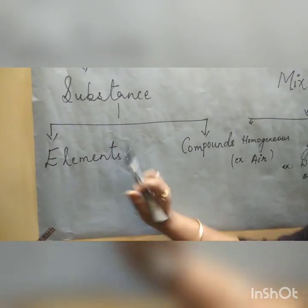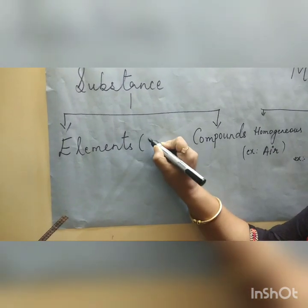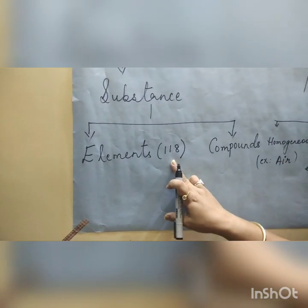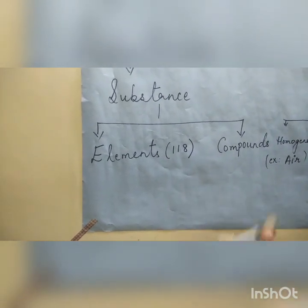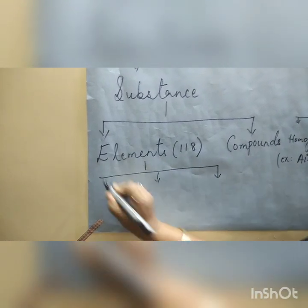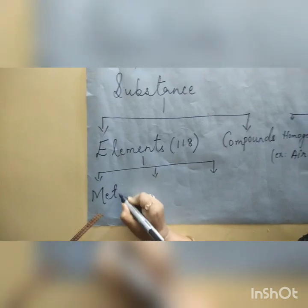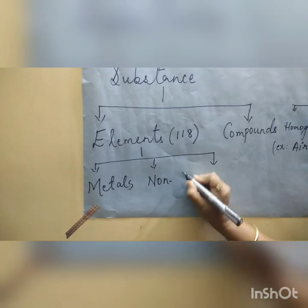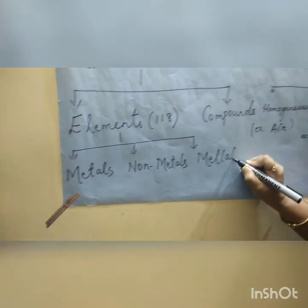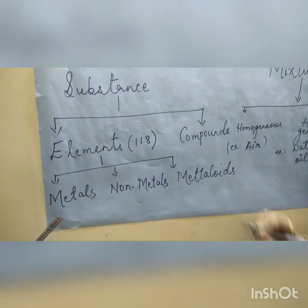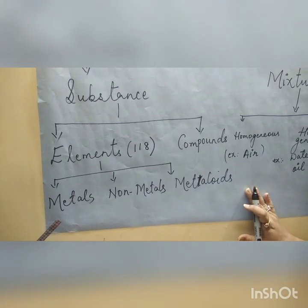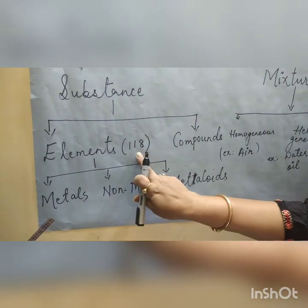Now children, till date we know there are around 118 elements. To study 118 elements is difficult, so what the scientists have done is divide elements into three groups: number one, metals; number two, non-metals; and number three, metalloids.